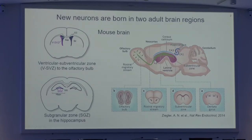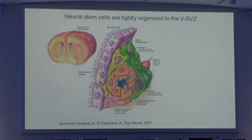This distance can be as long as four millimeters in the mouse brain. Once these new neurons reach the olfactory bulb, they disperse, differentiate, and integrate into pre-existing neural circuits in a continuous turnover. As you can imagine, these processes are very finely regulated.